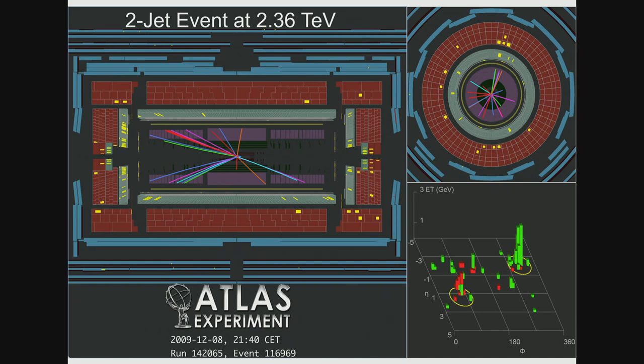Here's a typical event display. You have a collision in the middle, shown in different views — one looking down the beam and another in 3D. There's also a Lego plot where you unroll the azimuthal angle and pseudo-rapidity, and the height of the histograms shows energy deposited in different regions. These two jets are back to back in azimuthal angle — differing by about 180 degrees — but not back to back in pseudo-rapidity because the event is boosted. Most of the pseudo-rapidity is biased towards one side of the detector.